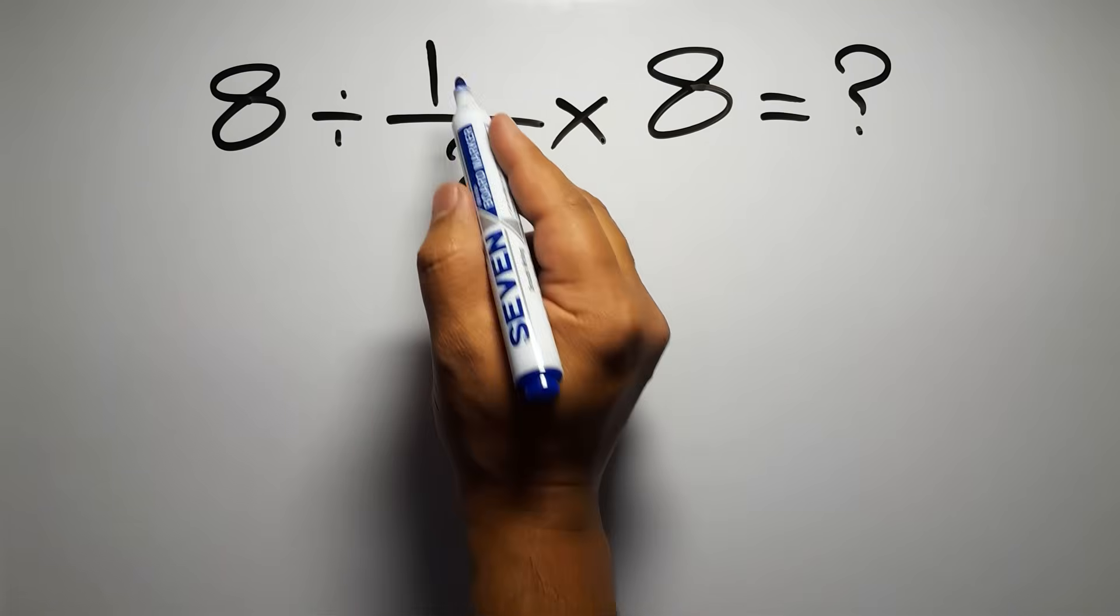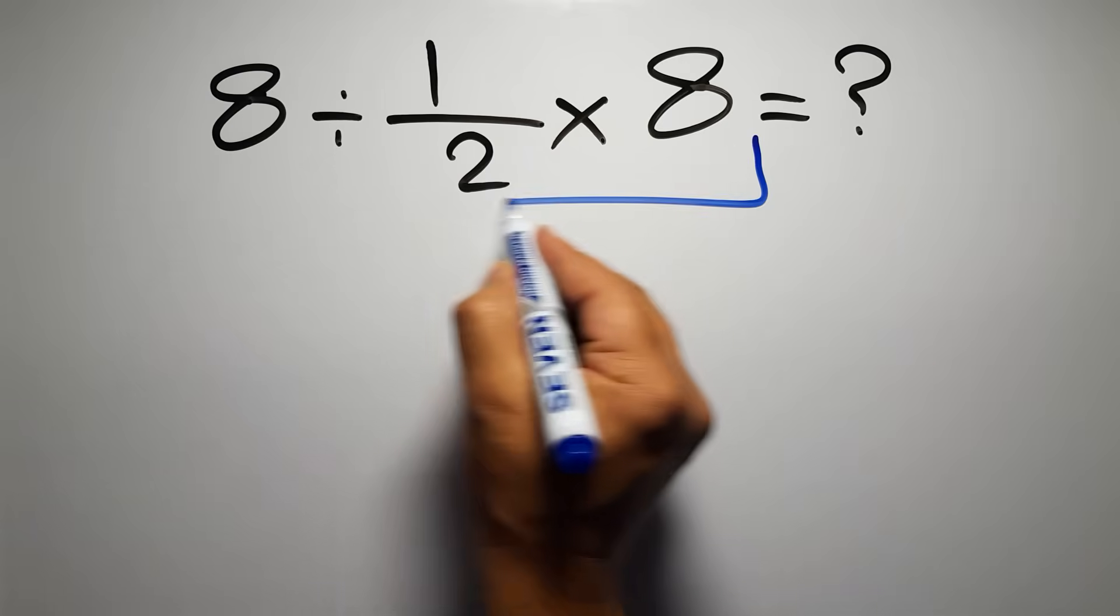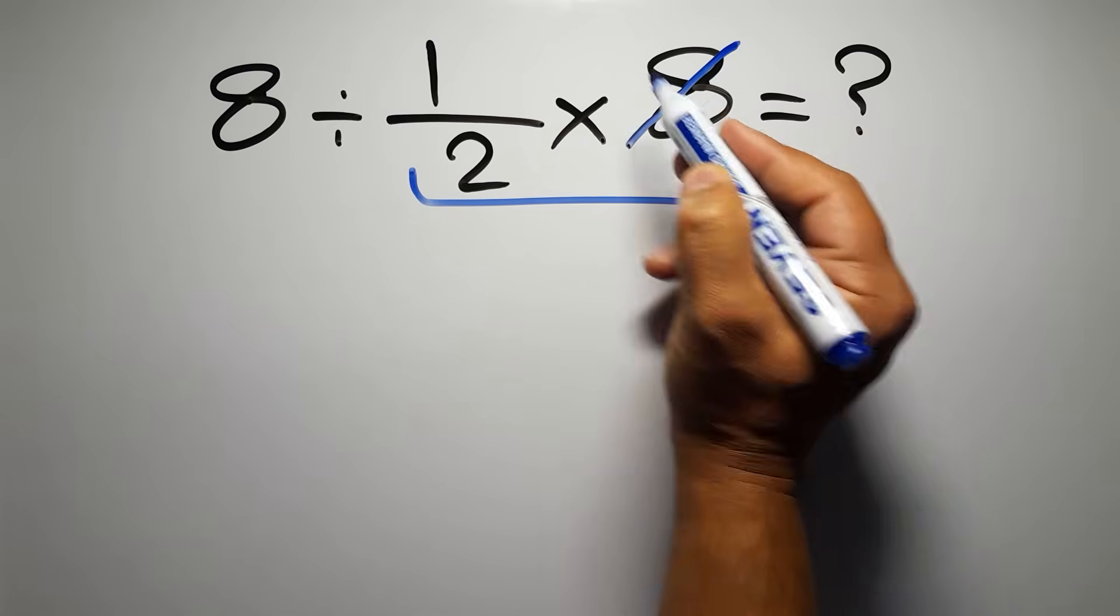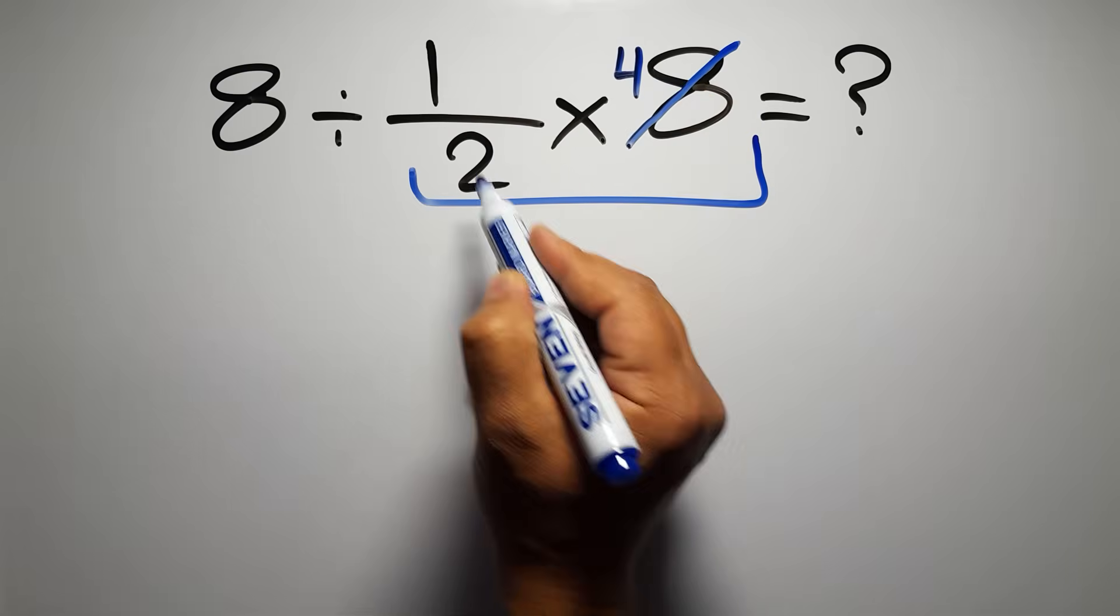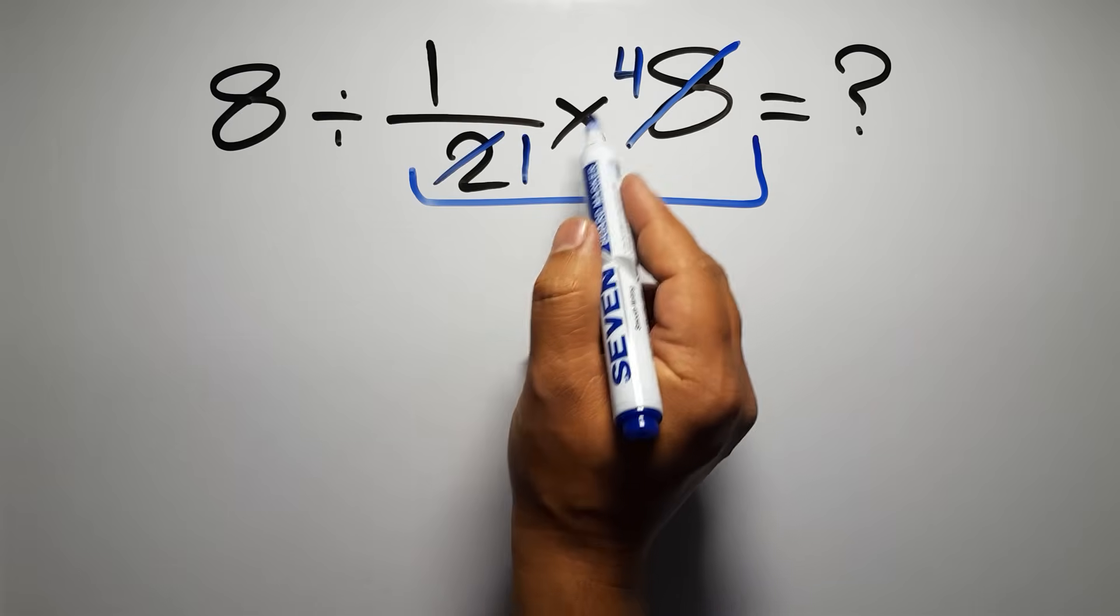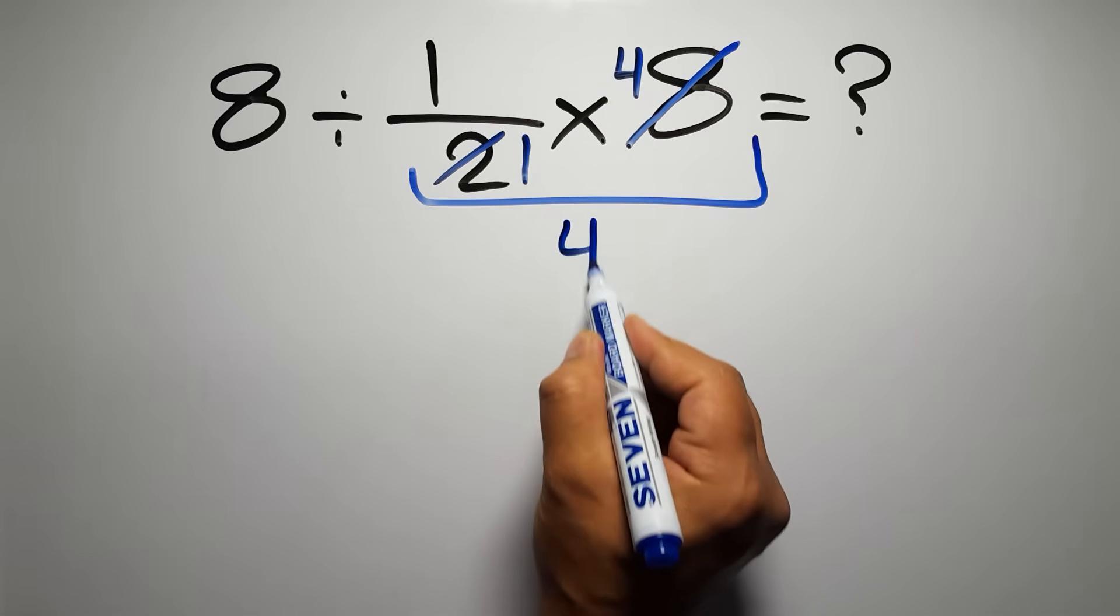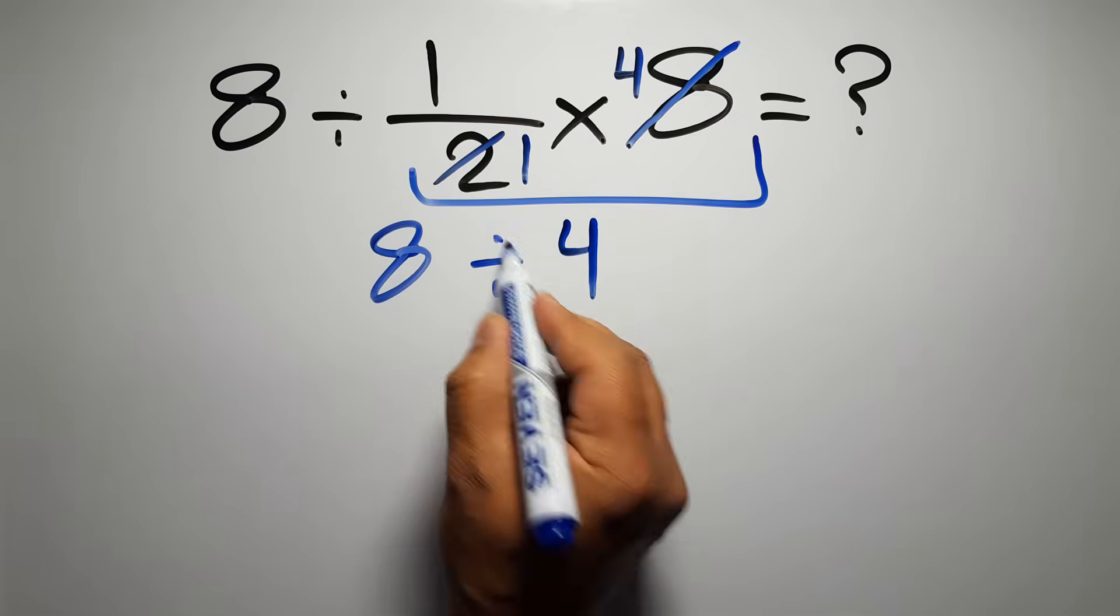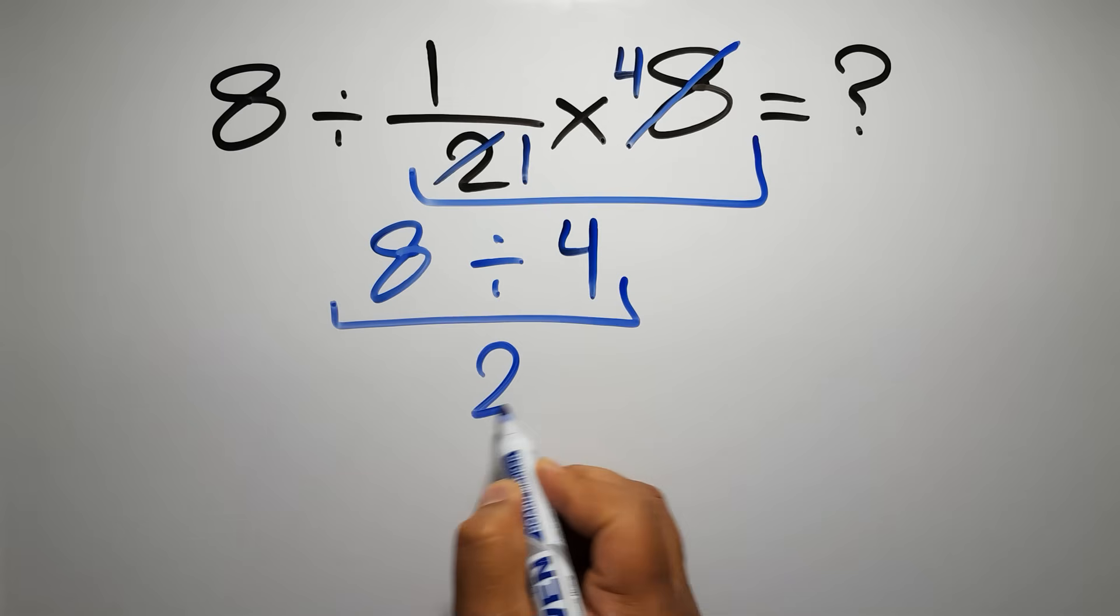First, we do this multiplication: 1 over 2 times 8. 8 divided by 2 gives us 4, and 2 divided by 2 is just 1, so here we have just 4. And 8 divided by 4 gives us 2.